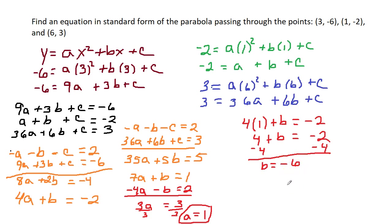Now, we know a and b. I am going to plug these into this green equation here. So, a plus b plus c equals negative 2. a is 1, so 1 plus negative 6 plus c equals negative 2. Negative 5 plus c equals negative 2. Add 5, and we get c equals 3.